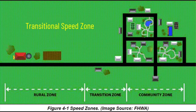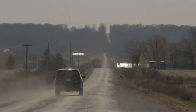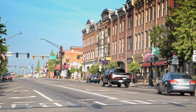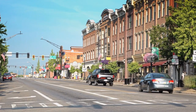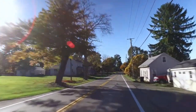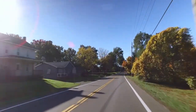The transitional speed zone is a section of roadway before a motorist enters a new community, often a rural or small town. This is the area where drivers need to identify an upcoming change in roadway character and then complete the necessary speed reduction in preparation for entering the community.